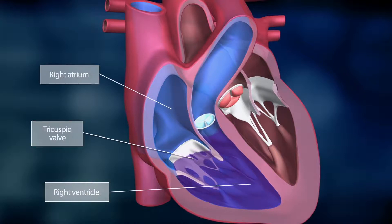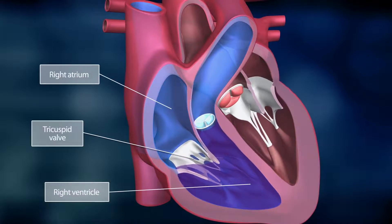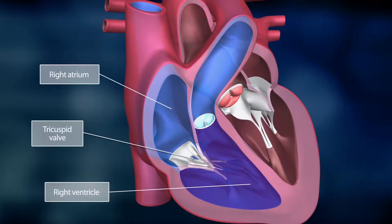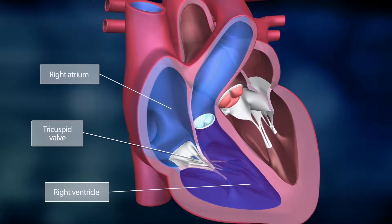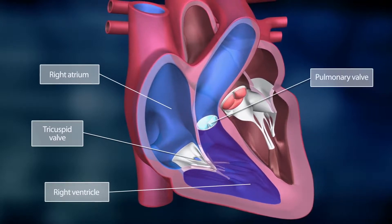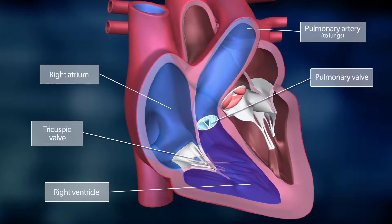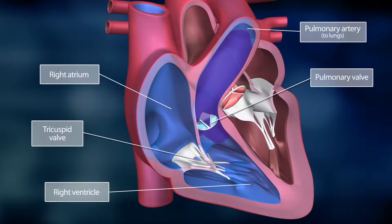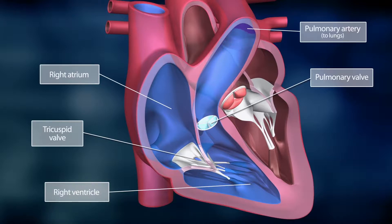When the right ventricle has filled with blood, the tricuspid valve closes, preventing blood from flowing back into the right atrium. Now the right ventricle contracts. The pulmonary valve opens and blood is pumped through the pulmonary artery into the lung, where it is enriched with oxygen. This phase is called ventricular systole. After this, the pulmonary valve closes quickly, preventing blood from flowing back into the right ventricle.